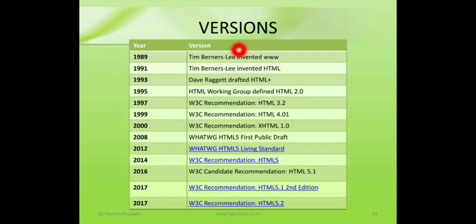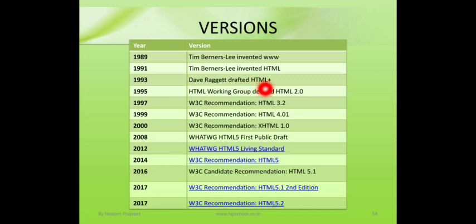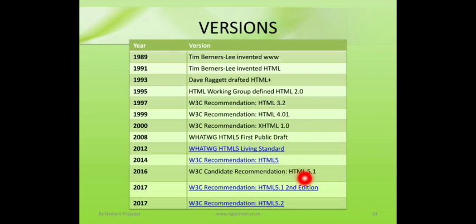Now there are some versions of HTML. In 1989, Tim Berners-Lee invented WWW; in 1991, he invented HTML; in 1993, Dave Raggett drafted HTML Plus; in 1995, the HTML working group defined HTML 2.0; then W3C recommendation HTML 3.2 in 1997; HTML 4.01 in 1999; and the latest version is HTML5, which includes many new features.